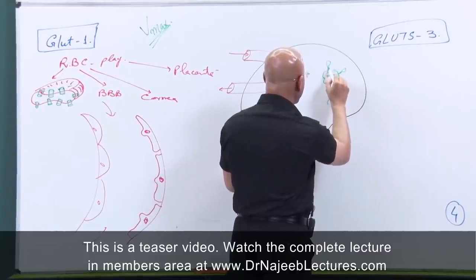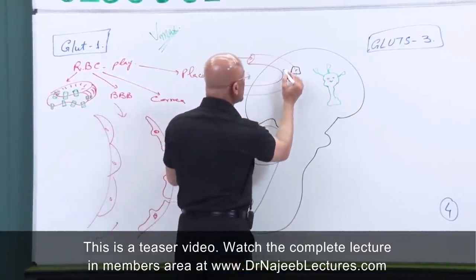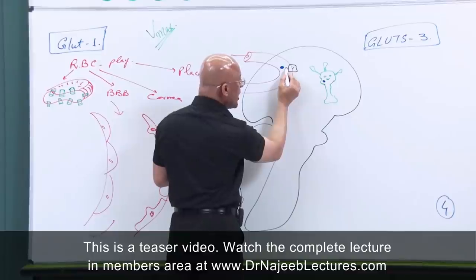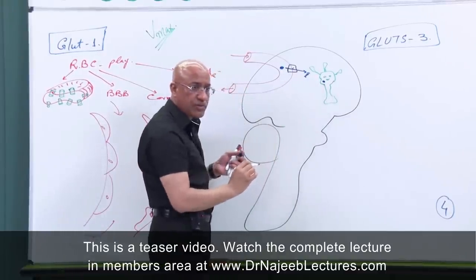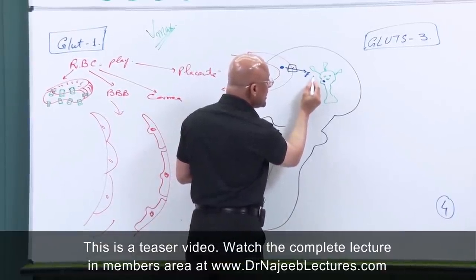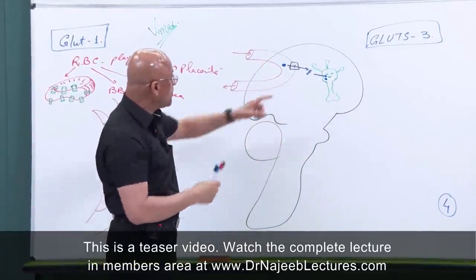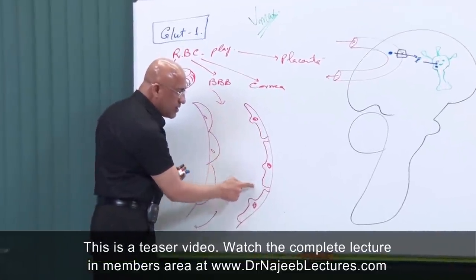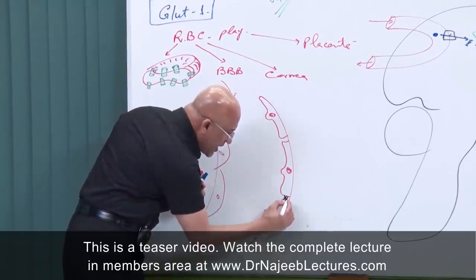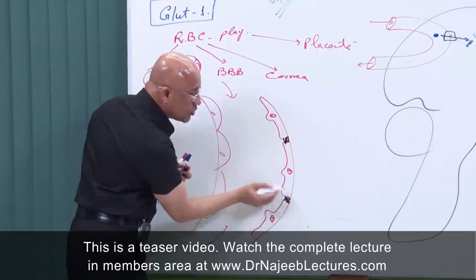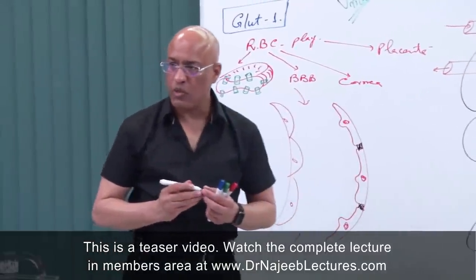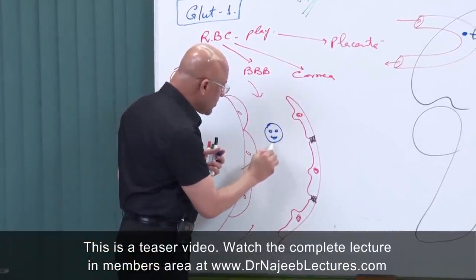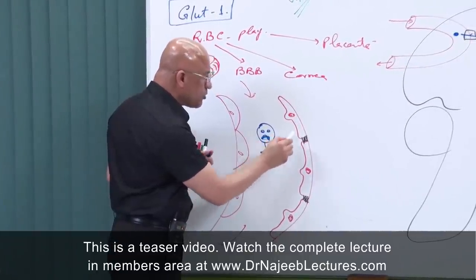For glucose to reach inside the neuron, it first has to cross from the blood into the interstitial fluid of the central nervous system, and then from the interstitial fluid it has to cross the neural membranes to enter the neuron. The first barrier here is the blood-brain barrier. The endothelial cells have tight junctions, which do not allow many substances to pass through the inter-endothelial gaps.